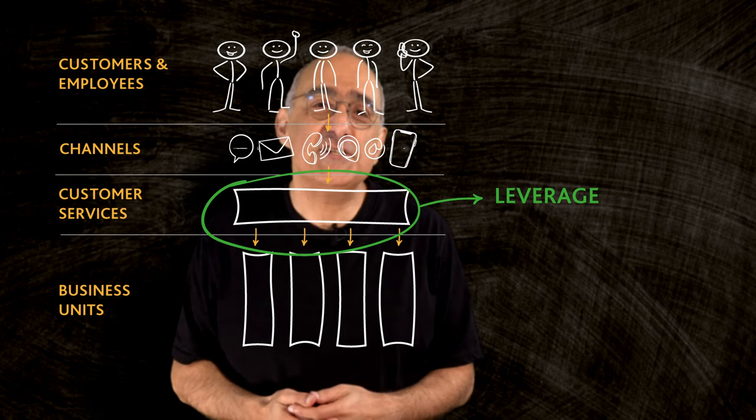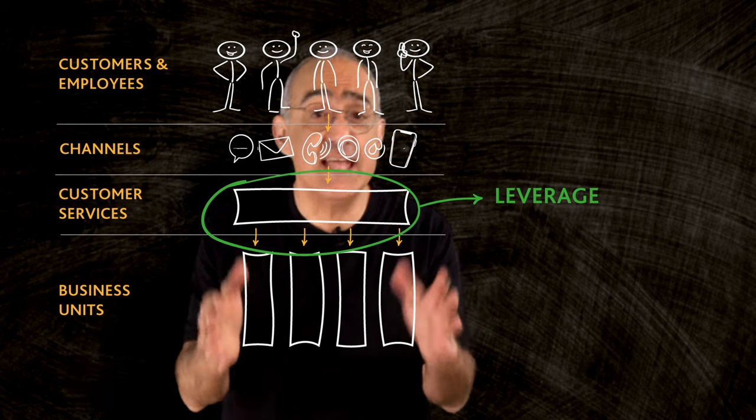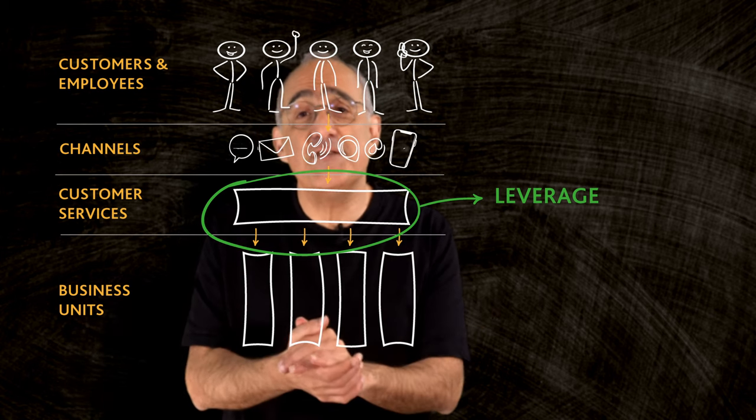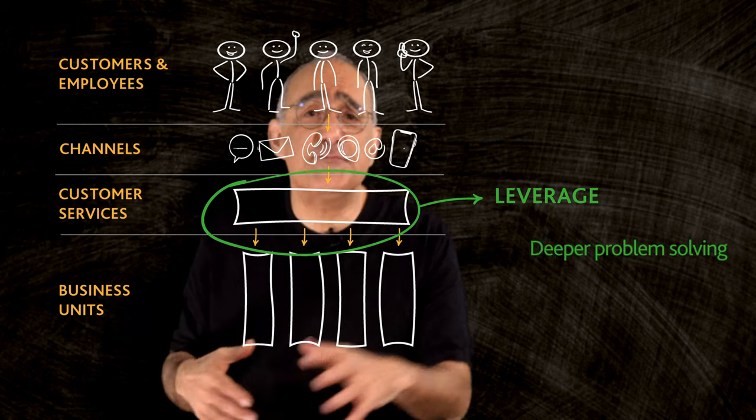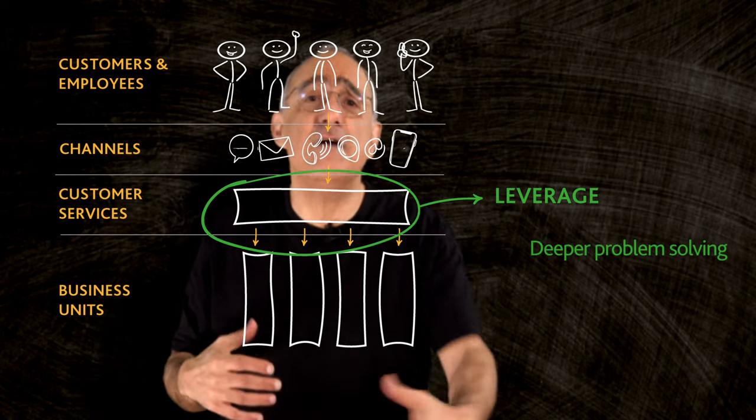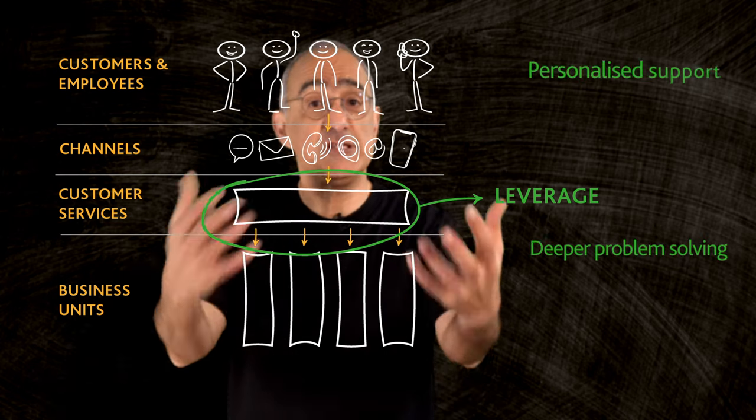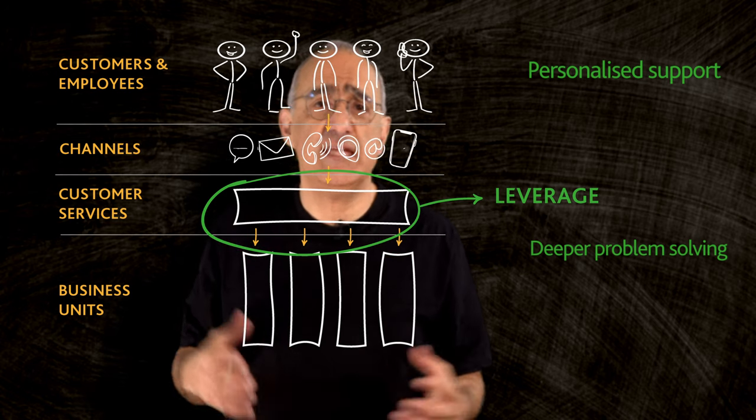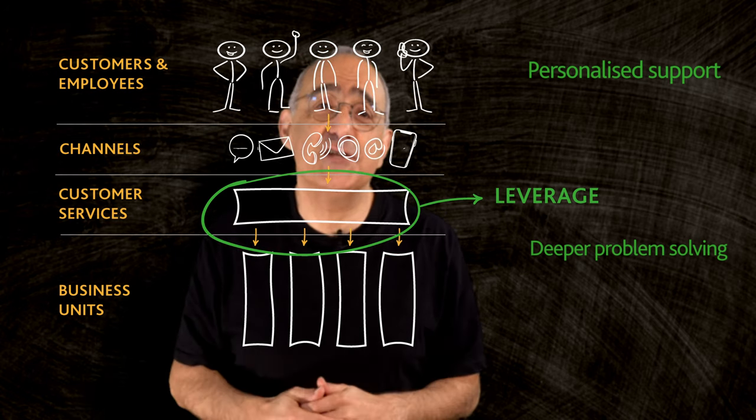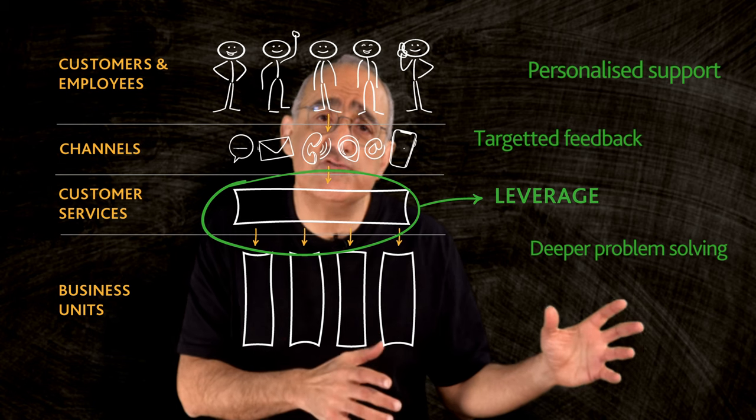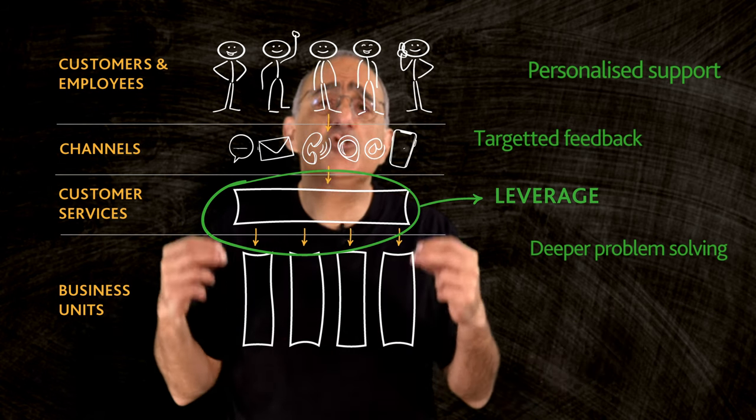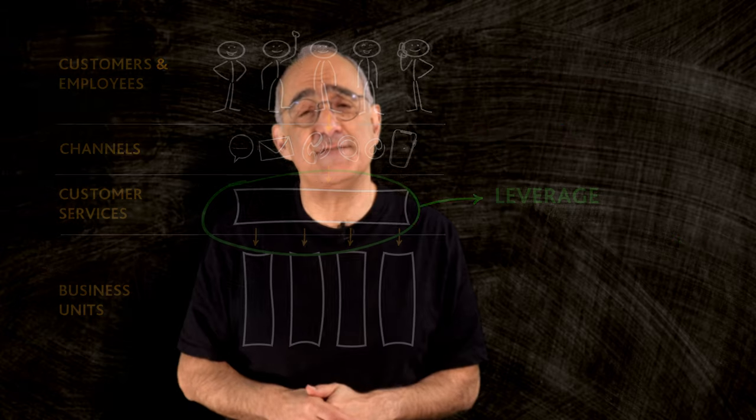High-value interactions can take various forms, such as longer initial phone conversations with support staff allowing for deeper problem solving and understanding of the customer's needs, personalized support through dedicated account managers or service delivery managers, and targeted post-resolution feedback to ensure continuous improvement and customer satisfaction.